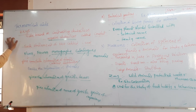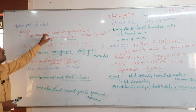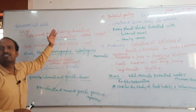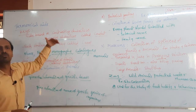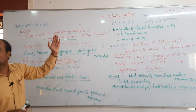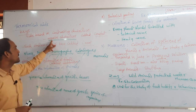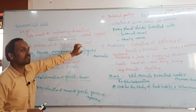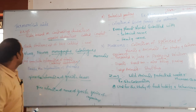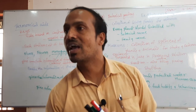This completes taxonomical aids. Keys are books based on contrasting characters which are always present as opposite characters - one superior, one inferior, one correct, one wrong - like tall and dwarf in Mendel's characters. Each statement of the key is called a lead, and the different types are flora, fauna, monographs, catalogs, and manuals.